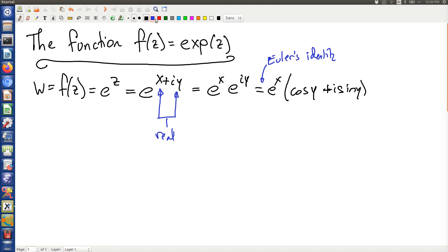And the thing to realize here is that e to the x is a dilation and this is a rotation by y radians. So e to the z is a dilation and a rotation.